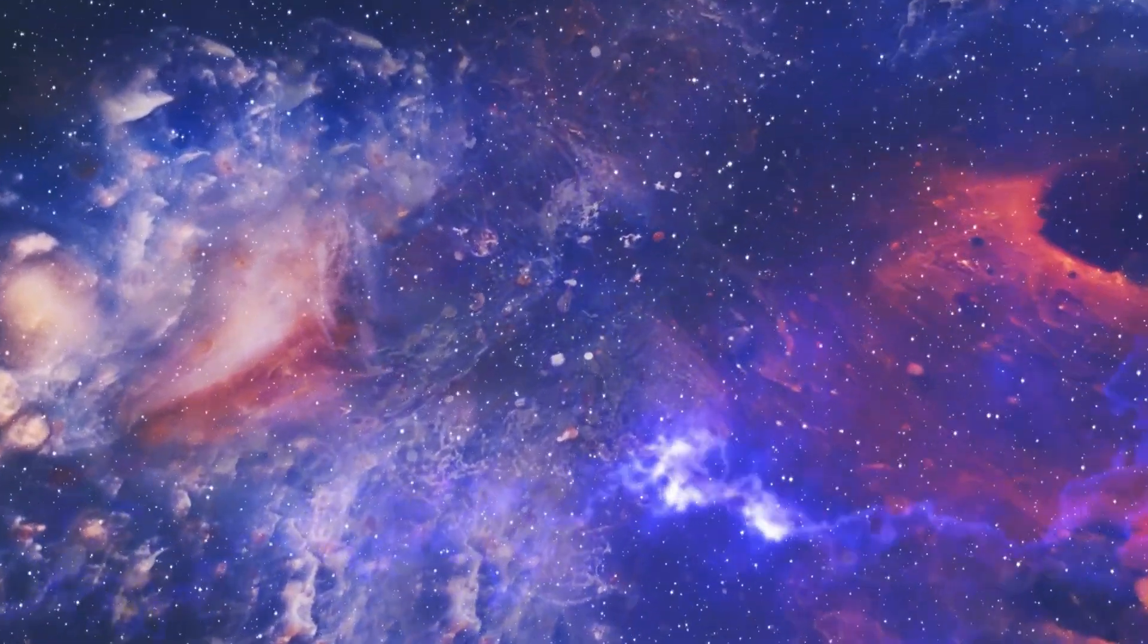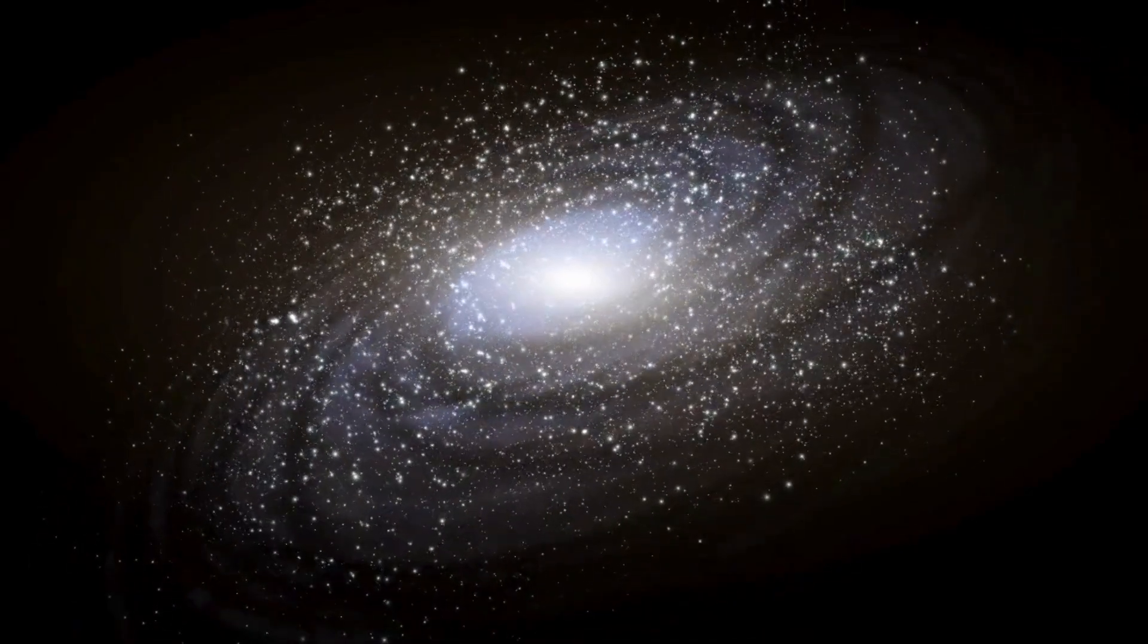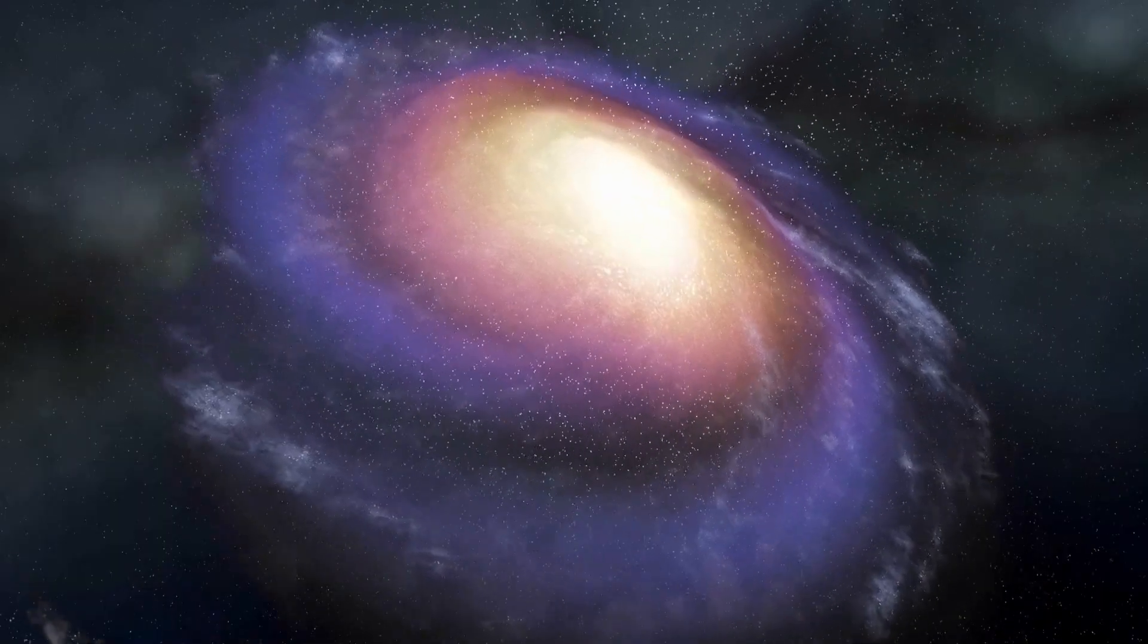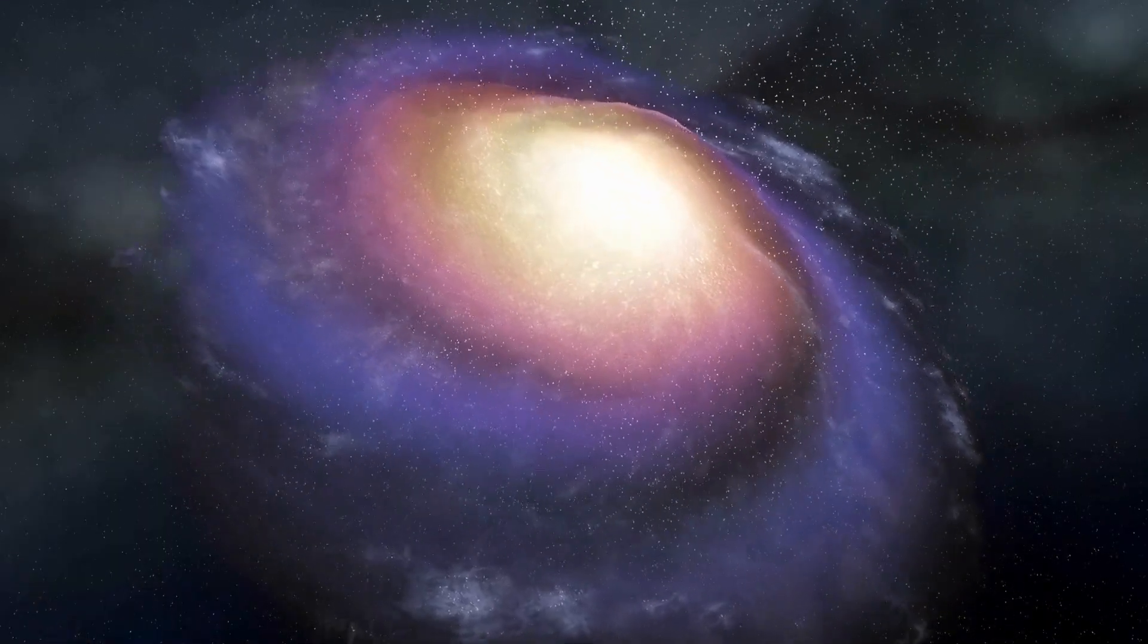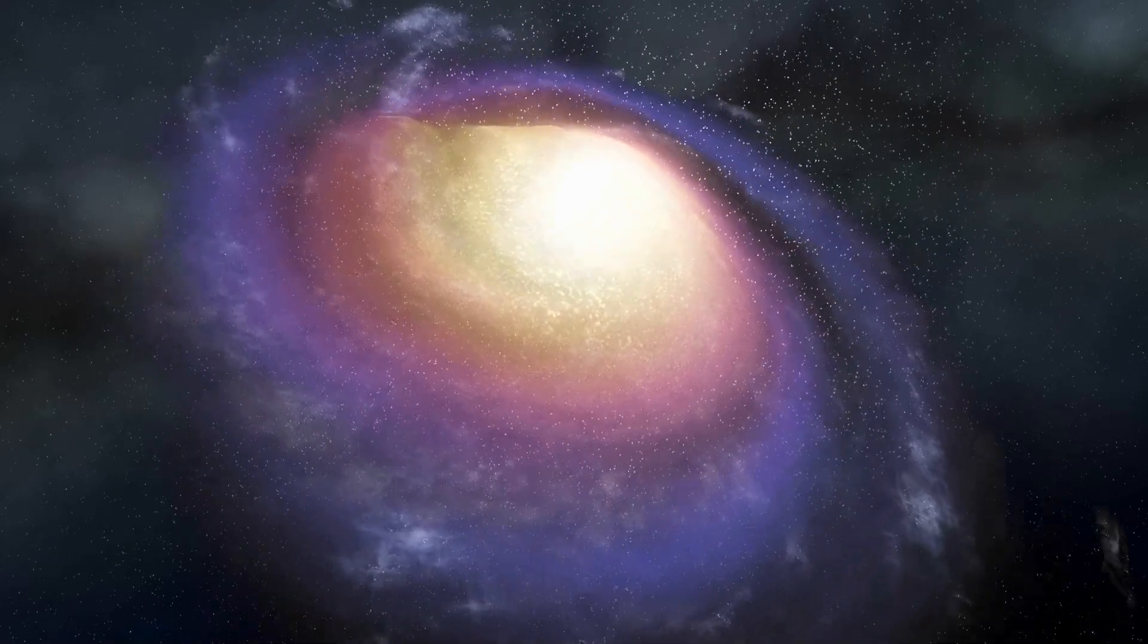A white dwarf is the remnant of a low or medium mass star that has exhausted its nuclear fuel. It's incredibly dense, about as massive as the sun but compressed to the size of Earth. When this happens, we will no longer be able to see its remnants from our planet, much like we observe the star today.